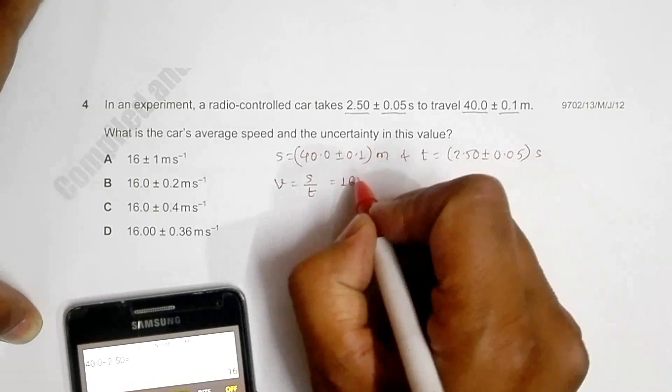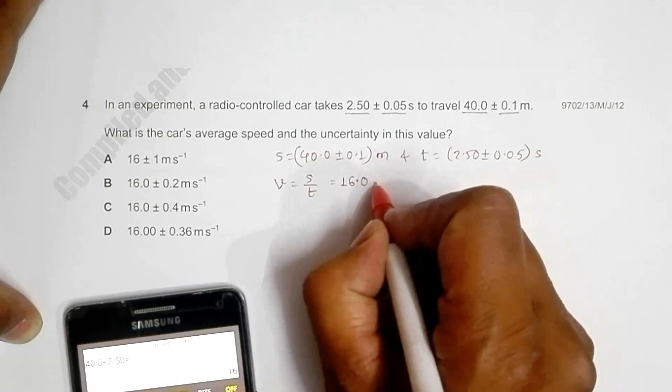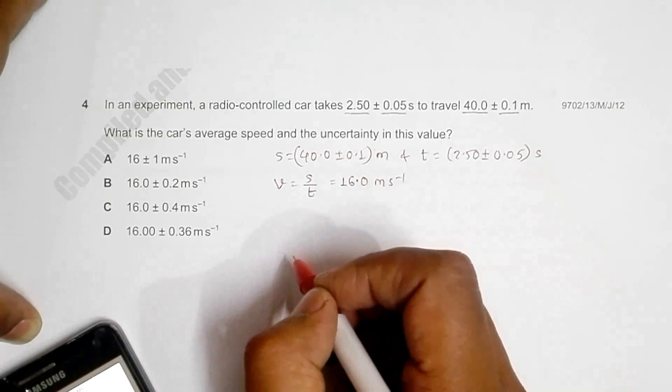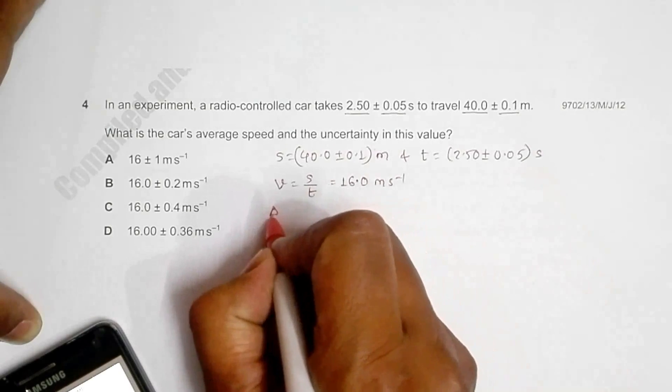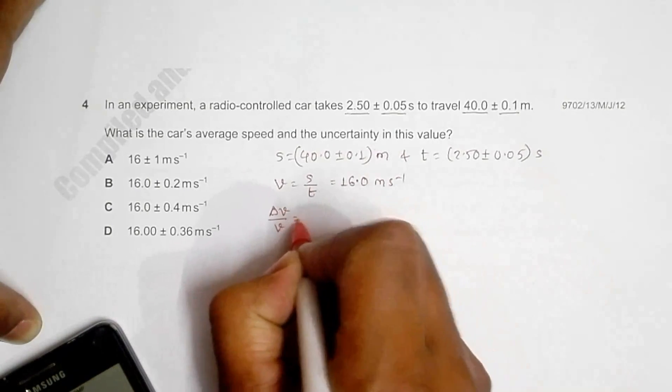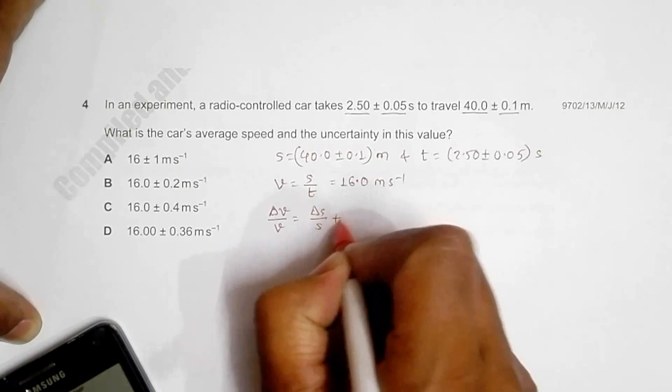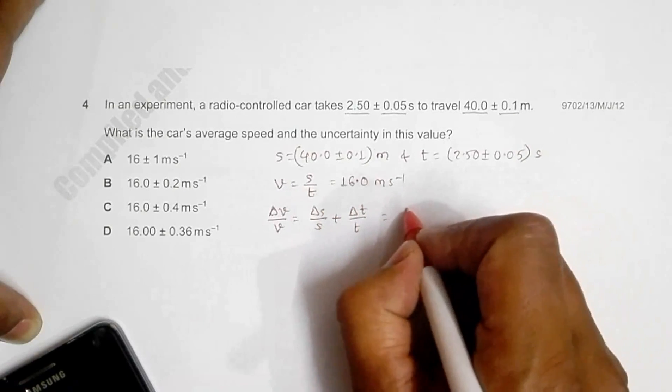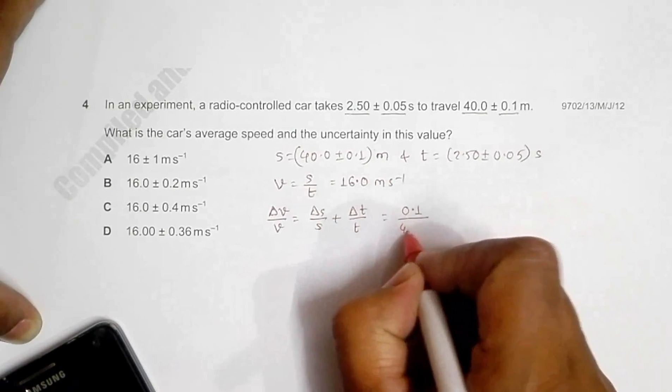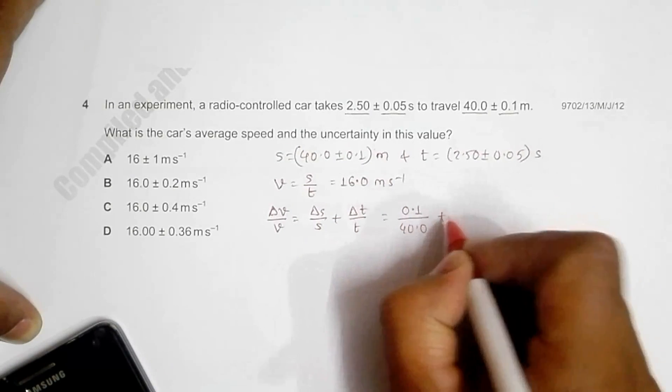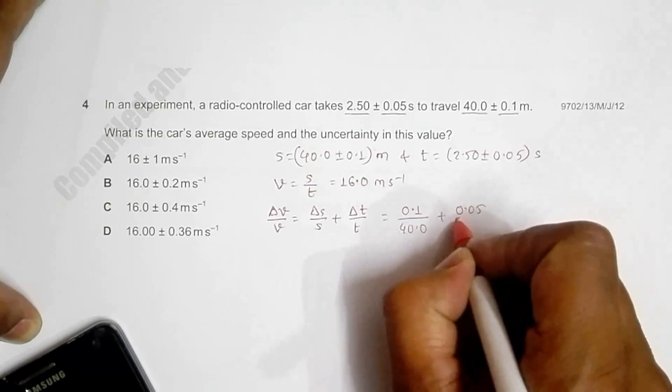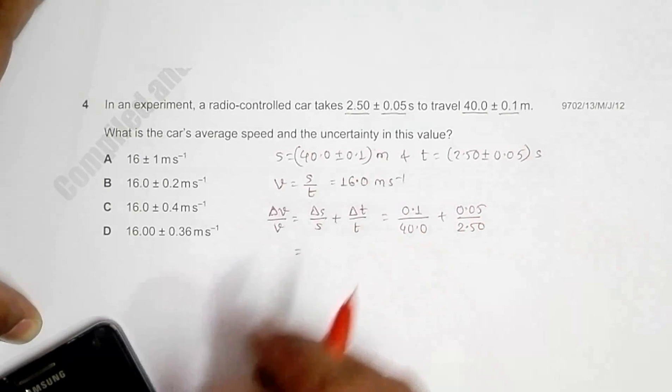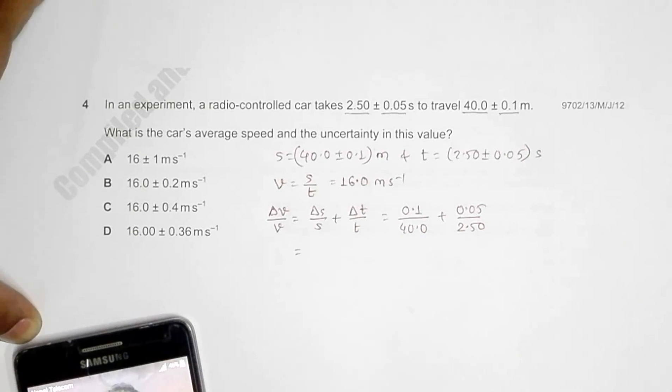Then in order to calculate uncertainty, we will have ΔV/V = Δs/s + Δt/t. That will be equal to 0.1/40.0 + 0.05/2.50.